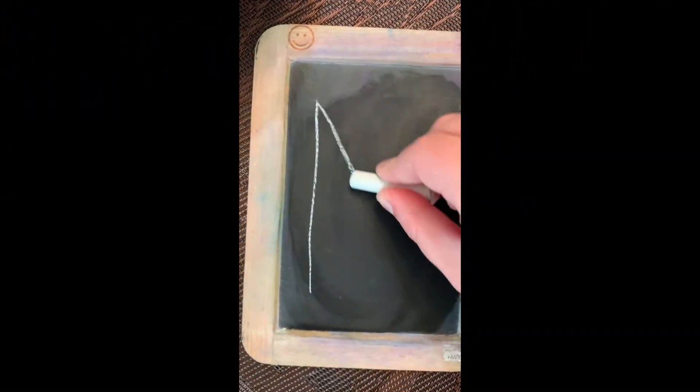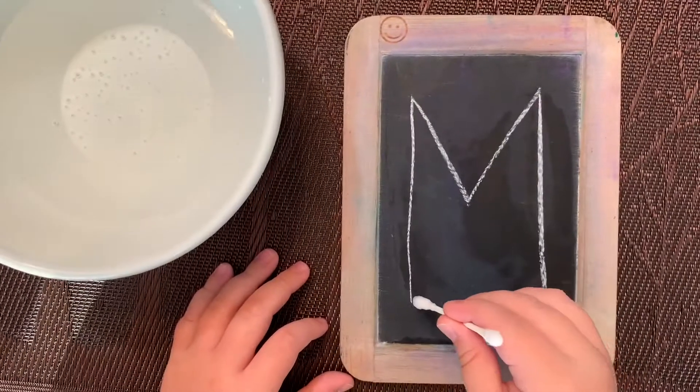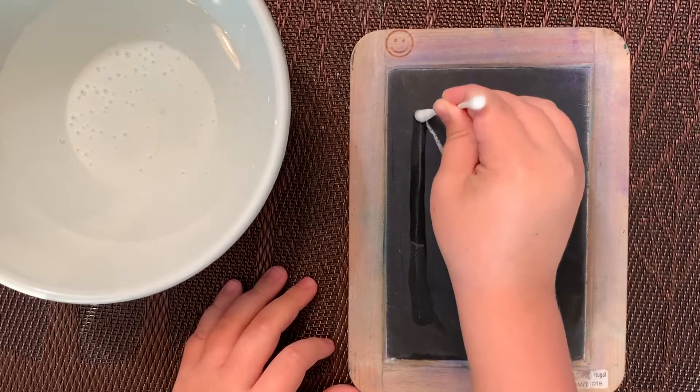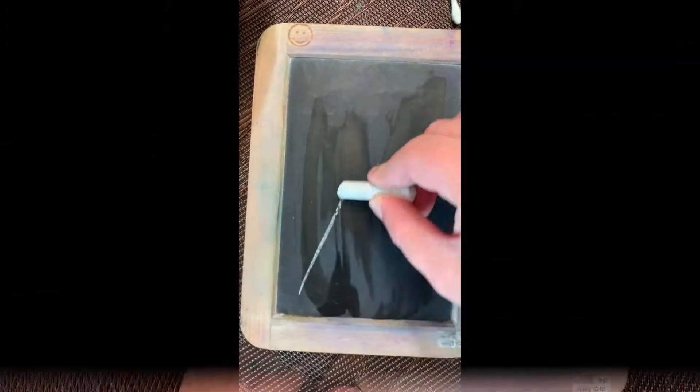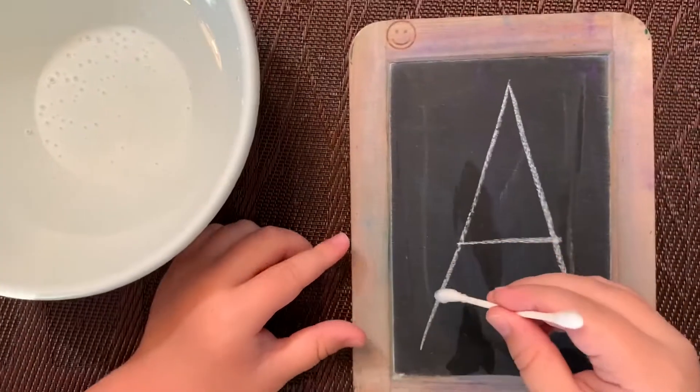And then you're ready to rock. This is a great way to practice writing your name. Write one letter at a time and then grab your Q-tip, dip it in the water, and trace the letters to wash the board clean again. Are you ready to see what this game looks like?